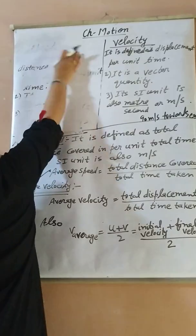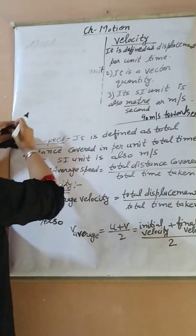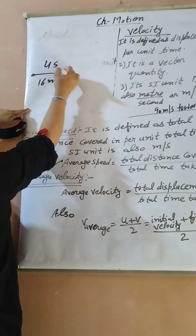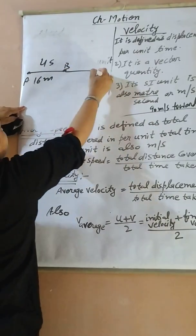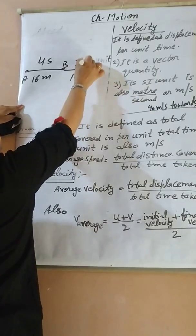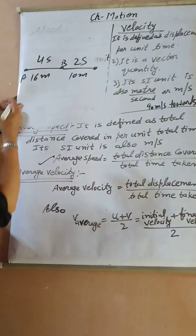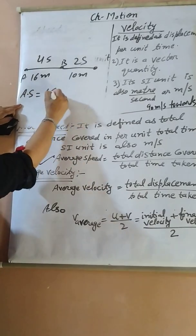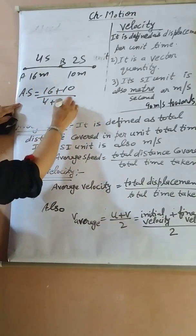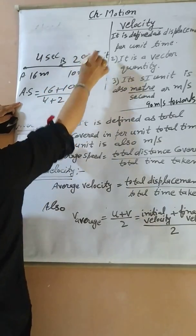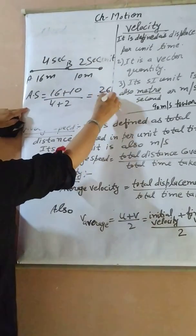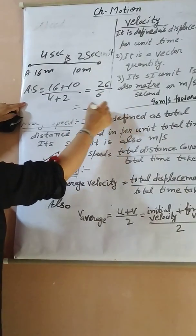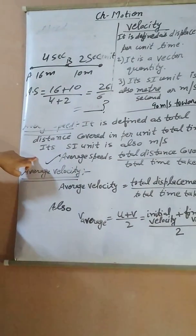Now look at this. If 16 meters are covered in 4 seconds, then A to B, and then 10 meters in 2 seconds — what is the average speed for this motion? Average speed equals (16 + 10) upon (4 + 2), which is 26 by 6. When you solve this you will get your answer. So this is average speed.